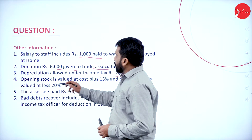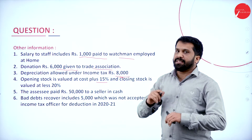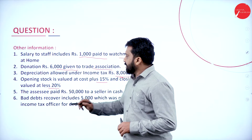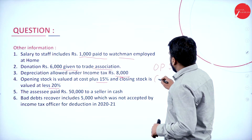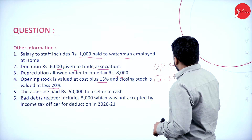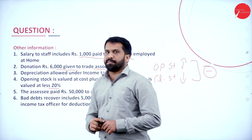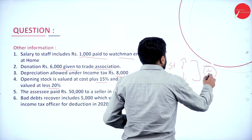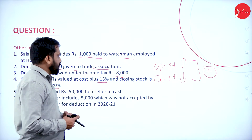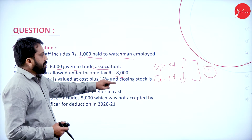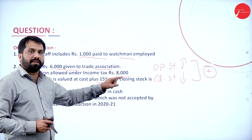Opening stock valued at cost plus means it is overvalued, and closing stock is valued less — undervalued. When opening stock is overvalued and closing stock is undervalued, you take them as disallowed items to add back. Conversely, if opening stock is decreased and closing stock increased, it becomes an allowed item to minus.